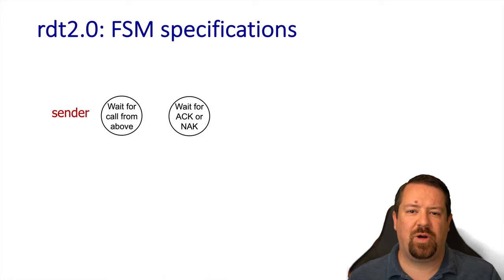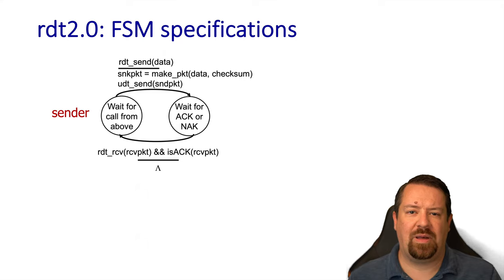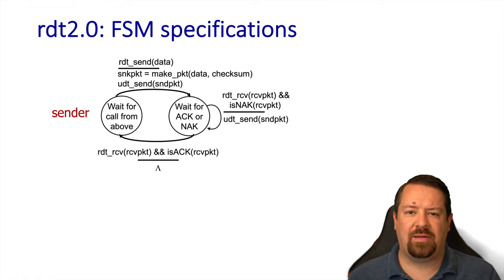The sender now has two states: one waiting for the application, and the other waiting for an acknowledgement. When a send data event occurs, the sender makes the packet from the data, adds a checksum, and sends it over the underlying channel, transitioning to waiting for an acknowledgement. When the acknowledgement comes back, the sender transitions back to waiting for a call from the application. Note that it's much more time-consuming to wait for the packet to be sent to the receiver and the acknowledgement to come back than it is to just send the packet, so there's a significant performance implication to using a stop-and-wait protocol. There's also one more possible event: the packet received from the receiver is a NAK. In this case, it retransmits the packet and goes back to waiting for an acknowledgement.